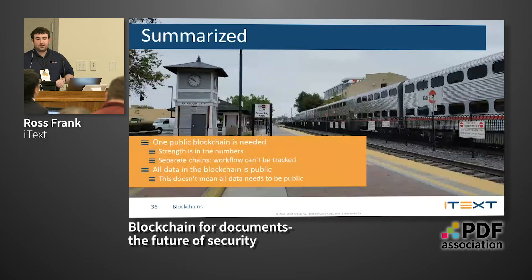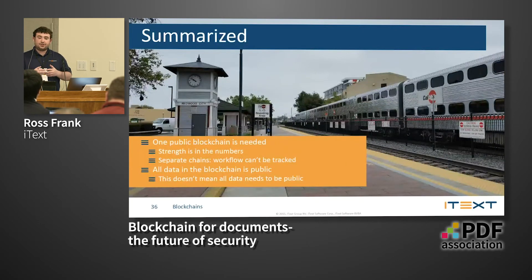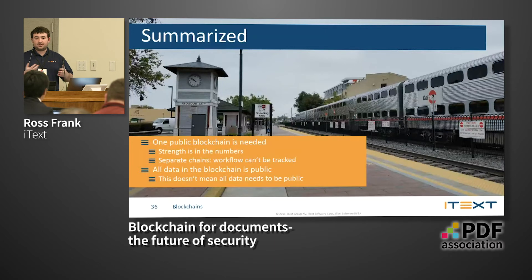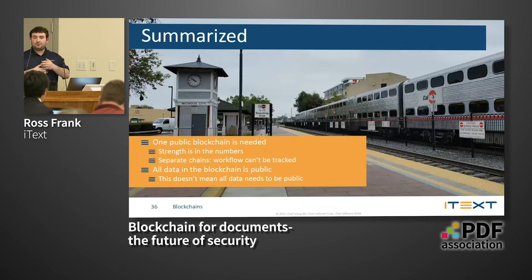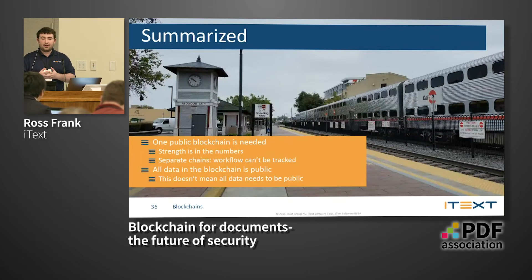In summary, one blockchain is needed — the information and people can use it differently but the strength is in the numbers. If separate blockchains happen, nothing can be tracked; if everything's together, it's very easy to look up that information. All the data on the blockchain is public, which is why hashing is a huge part of this — you can verify documents are correct without actually including the personal information.